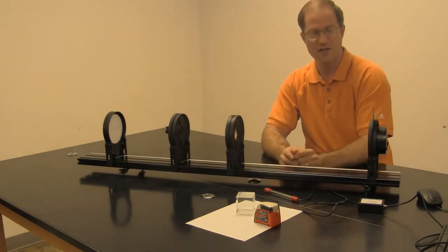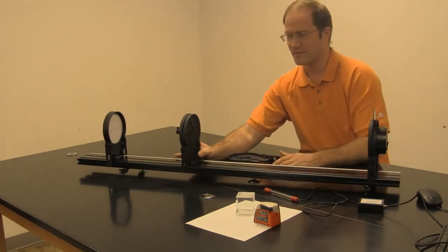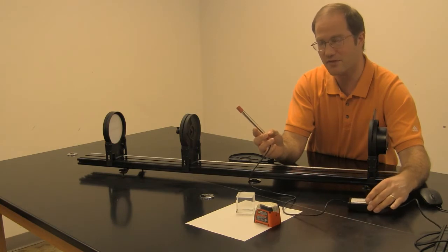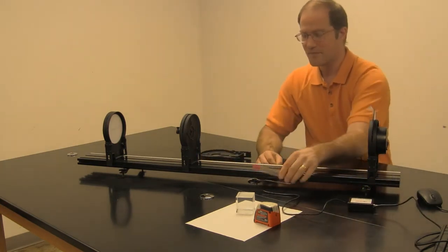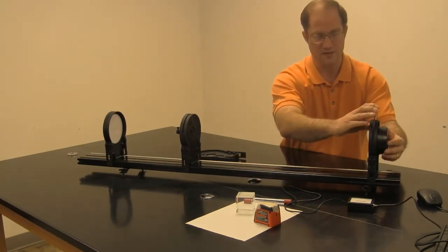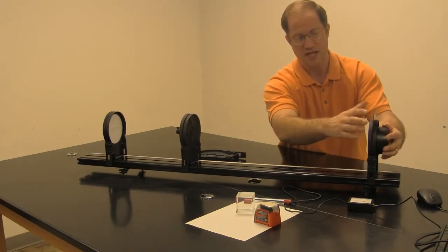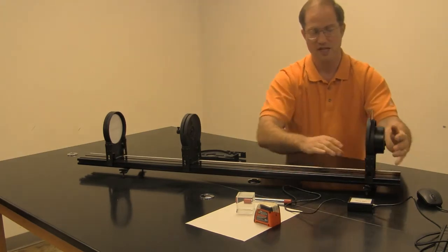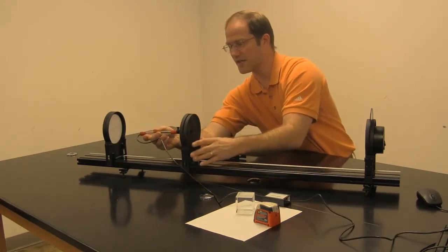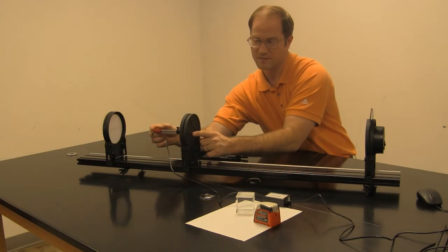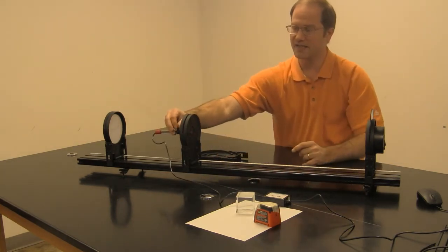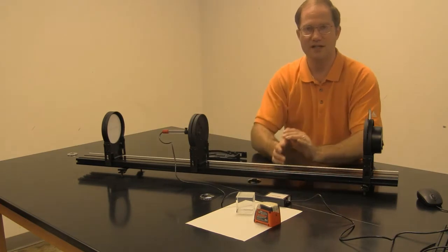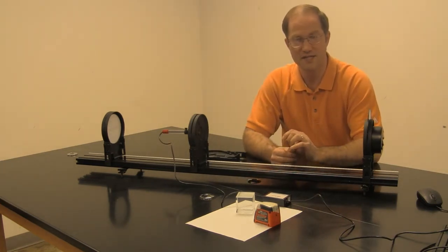One way to examine that inverse square relationship between light and distance from the source is using this optics table. Here, I have a light sensor attached to our Vernier Lab Pro which connects to the computer and reads intensity of light. Here on this optical bench, I have a light source. I can turn this aperture until I get the circular aperture here and put it at a fixed distance around 10 centimeters. When I use this attachment to hold my light sensor up to the front here, I can examine the relationship between distance and intensity.